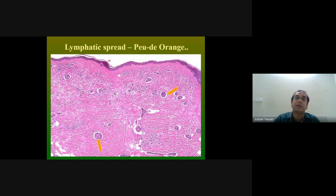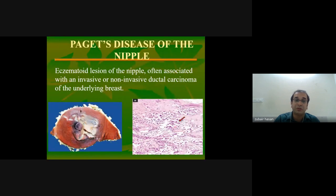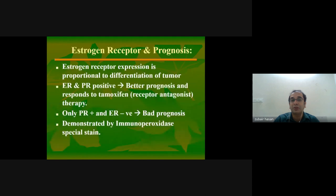In metastatic spread, the nipple can sometimes get involved by IDC or breast cancer, giving a peau d'orange skin appearance. Paget's disease of the nipple is another important condition — it can present as eczema of the breast nipple and is associated with invasive ductal carcinoma of the breast.